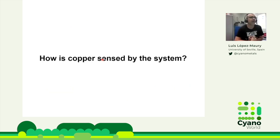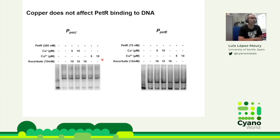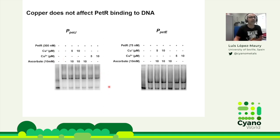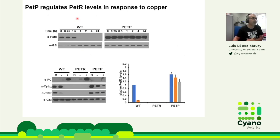We didn't know how copper is sensed by the system. For most metalloregulatory proteins, the sensor is directly in the transcriptional factor — it binds the metal and changes its DNA binding. So we first tested whether copper affected PETR binding to DNA. Neither the reduced nor oxidized form of copper changed the protein's DNA binding, suggesting copper is not sensed through the transcriptional factor but through the protease, whose levels of PETR are controlled in response to copper.